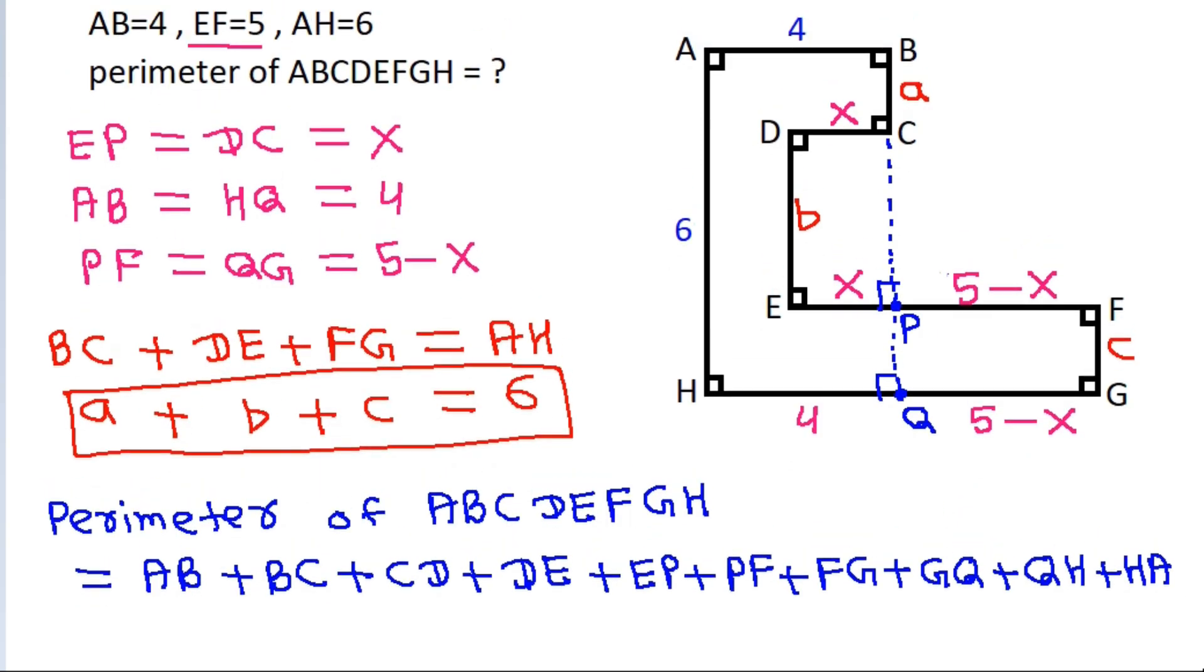AB is 4, plus BC is a, plus CD is X, plus DE is b, plus EP is X, plus PF is 5 minus X, plus FG is c, plus GQ is 5 minus X, plus QH is 4, plus HA is 6.